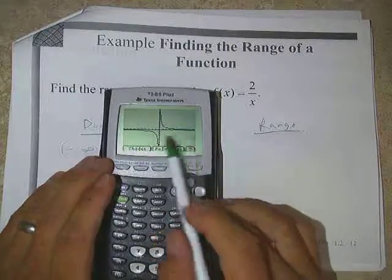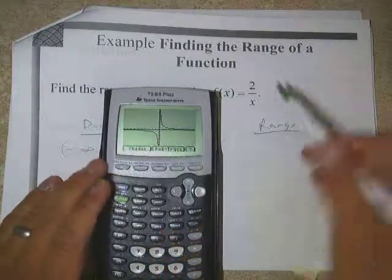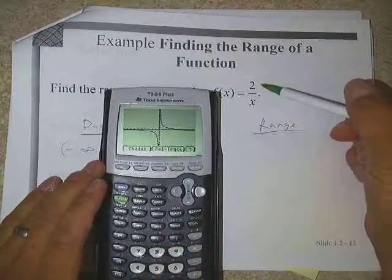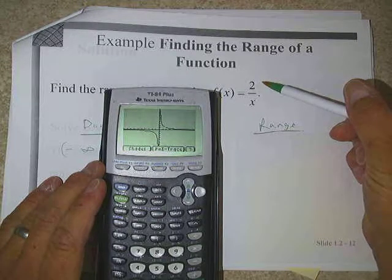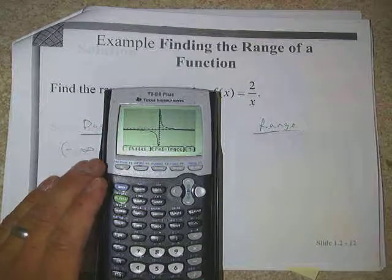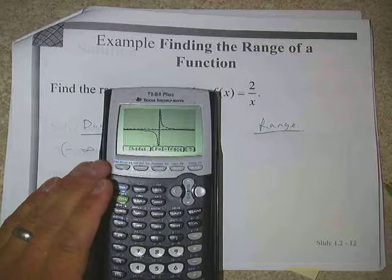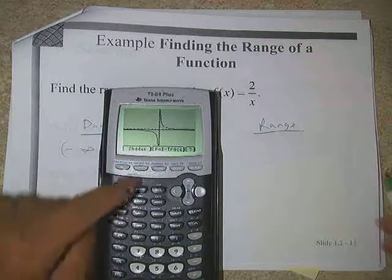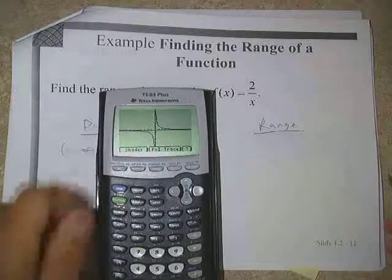Looking at the graph of f(x) = 2/x: we can see that it does exclude zero — it has an asymptote at zero, as expected, and zero doesn't have a value.